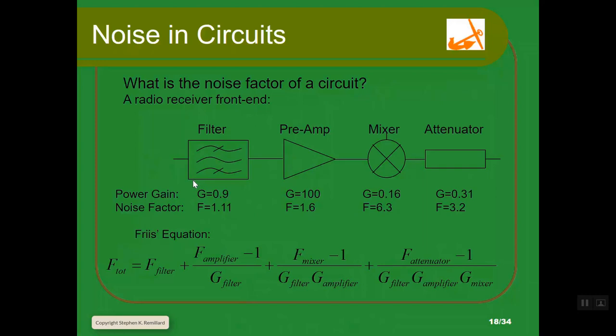We'll apply it to circuits. Here's a subsystem, a receiver front end. It has a filter, a pre-amplifier, a mixer, an attenuator. The filter is a band pass filter. The slashes tell you what type of filter it is. A slash on the first and last tells you it's band pass. It has a gain of 0.9, meaning it's attenuating because what comes out is 90% of what went in. It has a noise factor of 1.11. These are givens.